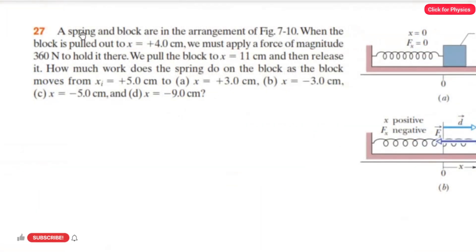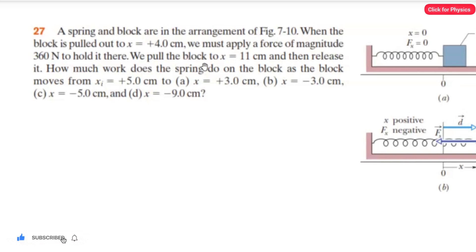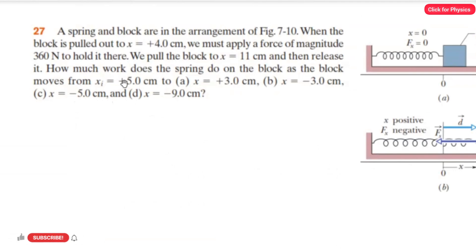Problem number 27: a spring and block are in the arrangement shown in the figure. When the block is pulled out to x = 4 cm, we must apply a force of 360 newtons to hold it there. Then we pull the block to x = 11 cm and release it. We need to find how much work the spring does on the block as the block moves from xi = 5 cm to various xf values: 3 cm, then -3 cm, then -5 cm, and then -9 cm. It's important to read the question carefully — it asks for work done by the spring on the block.